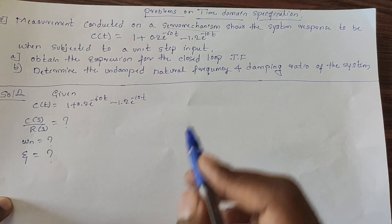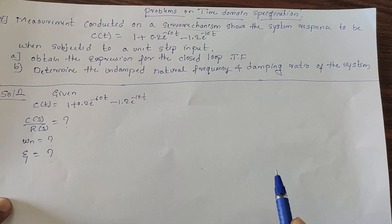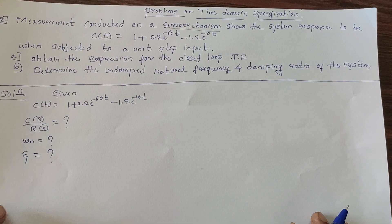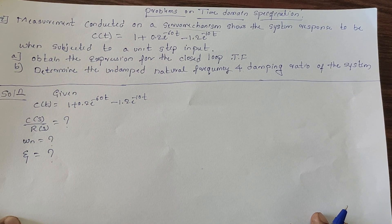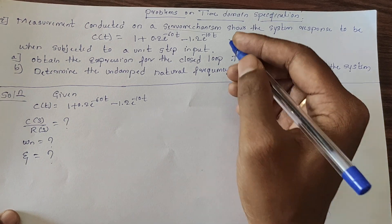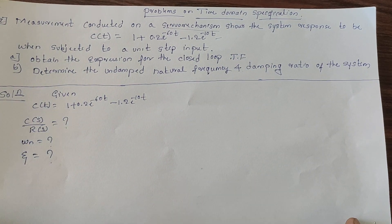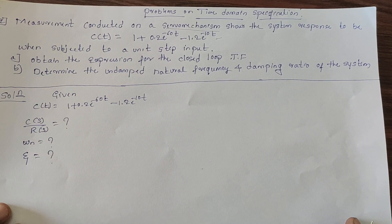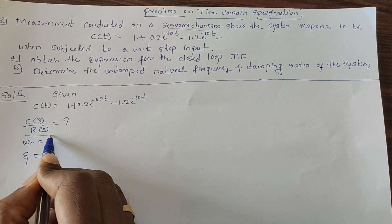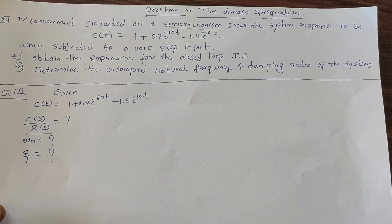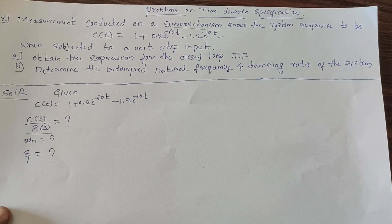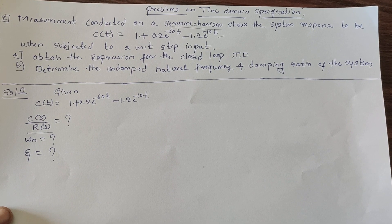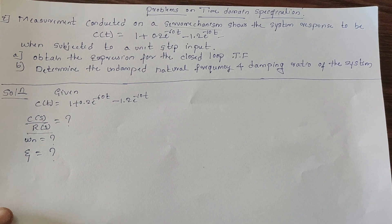Measurement conducted on a servo mechanism shows that the system responds as c(t) = 1 + 0.2 × e^(−60t) − 1.2 × e^(−10t), when subjected to a unit step input. We need to find: first, the closed-loop transfer function C(s)/R(s); second, the undamped natural frequency ωn; and third, the value of damping ratio ζ.